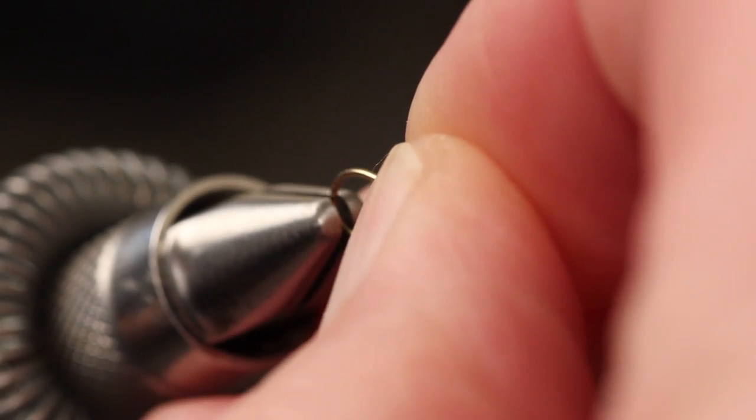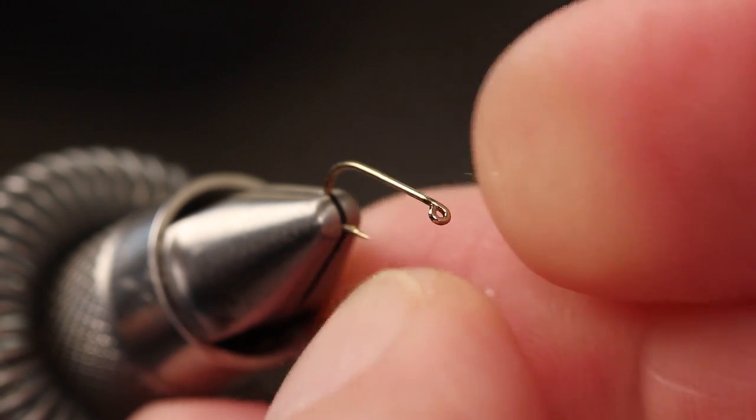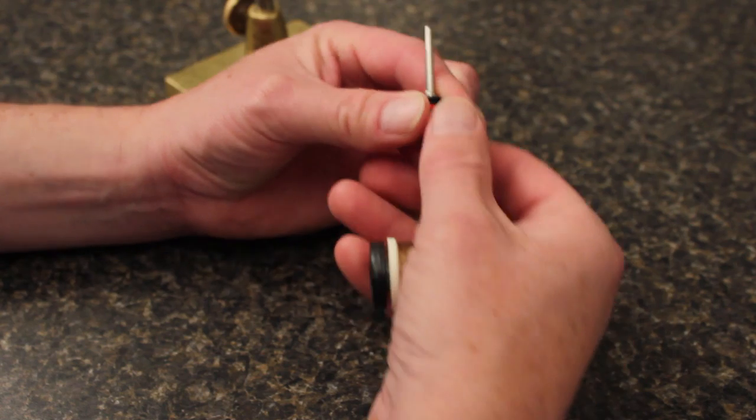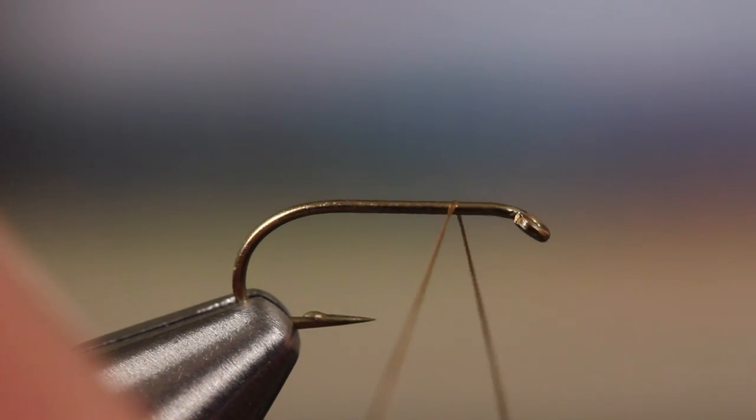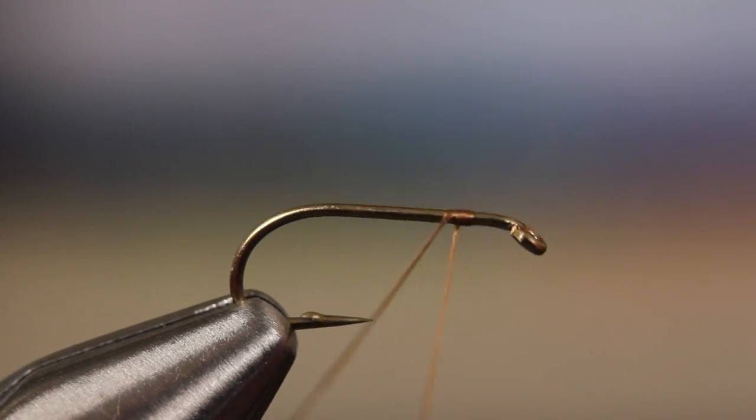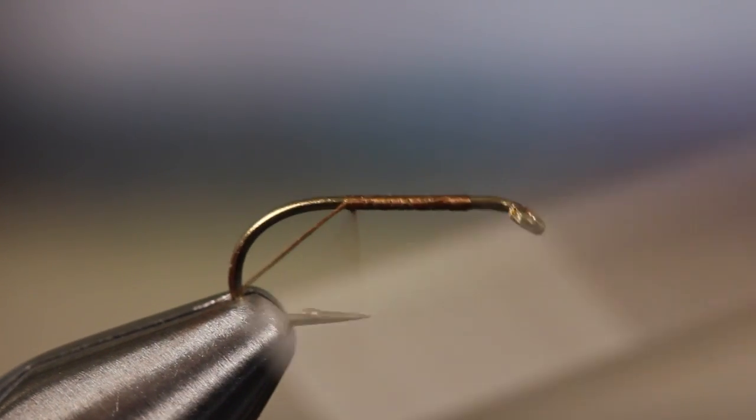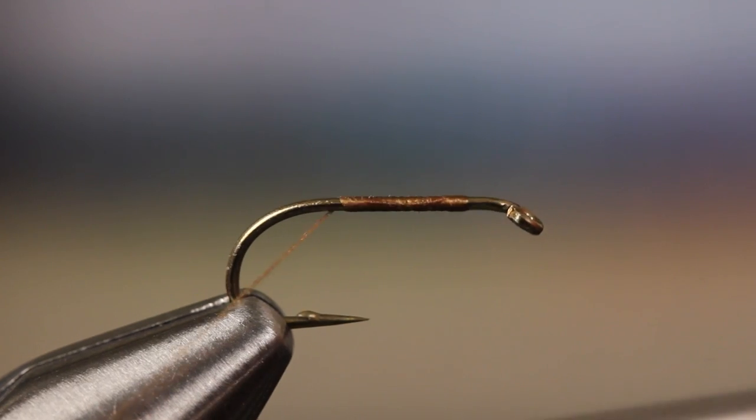After flattening the barb and getting the hook firmly secured in his vise, Matt loads a bobbin with a spool of 6.0 Olive Danville. Start your thread on the hook shank, leaving an eye-length space behind the eye. Take wraps rearward to halfway between the point and the barb and then break or snip off the tag.